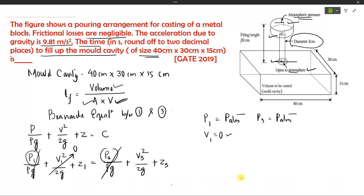The remaining terms are z1, v3²/2g, and z3. Taking z3 as datum, z3 becomes zero, and z1 is 20 centimeters as given in the question. Simplifying, we get v3 = √(2 g z1).